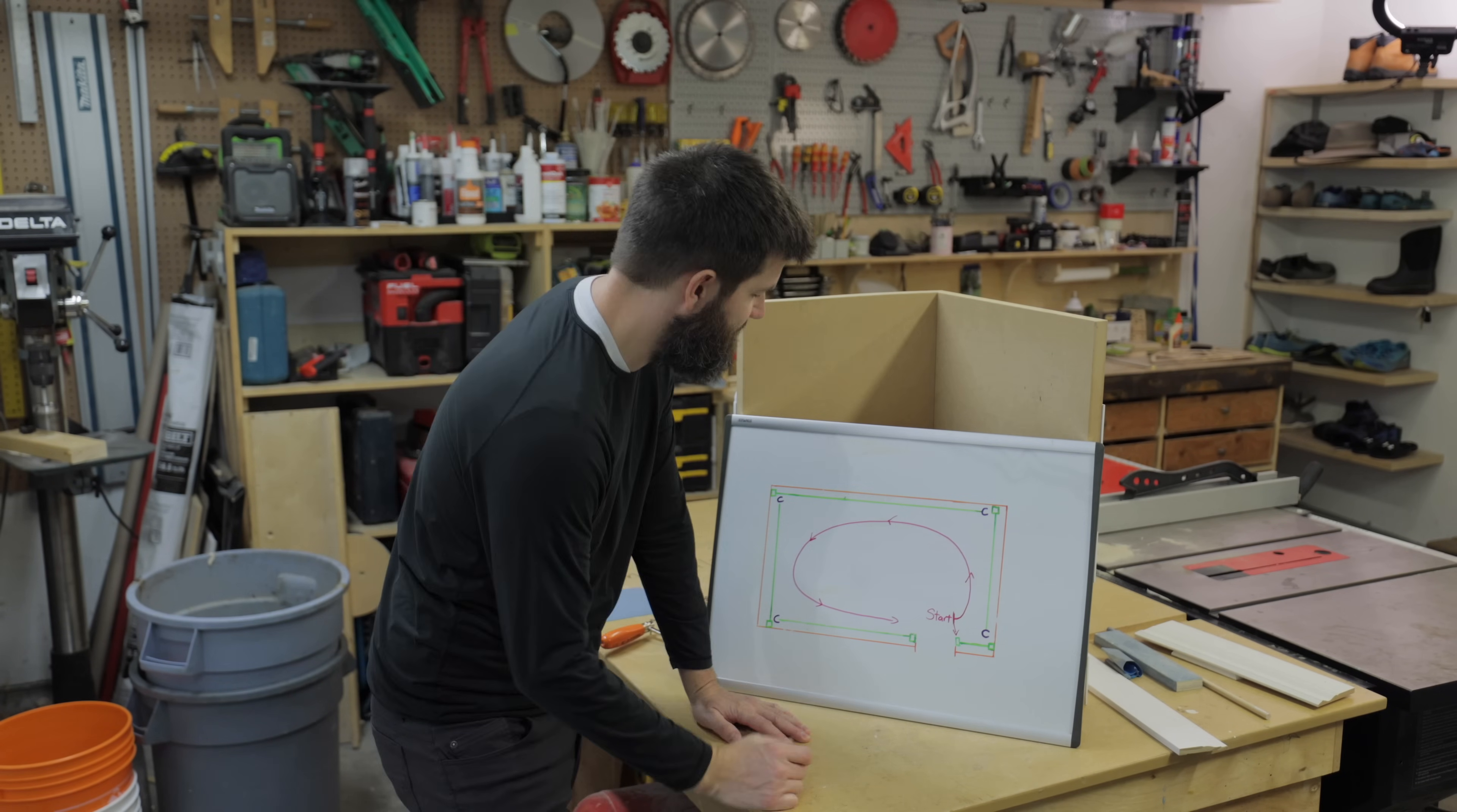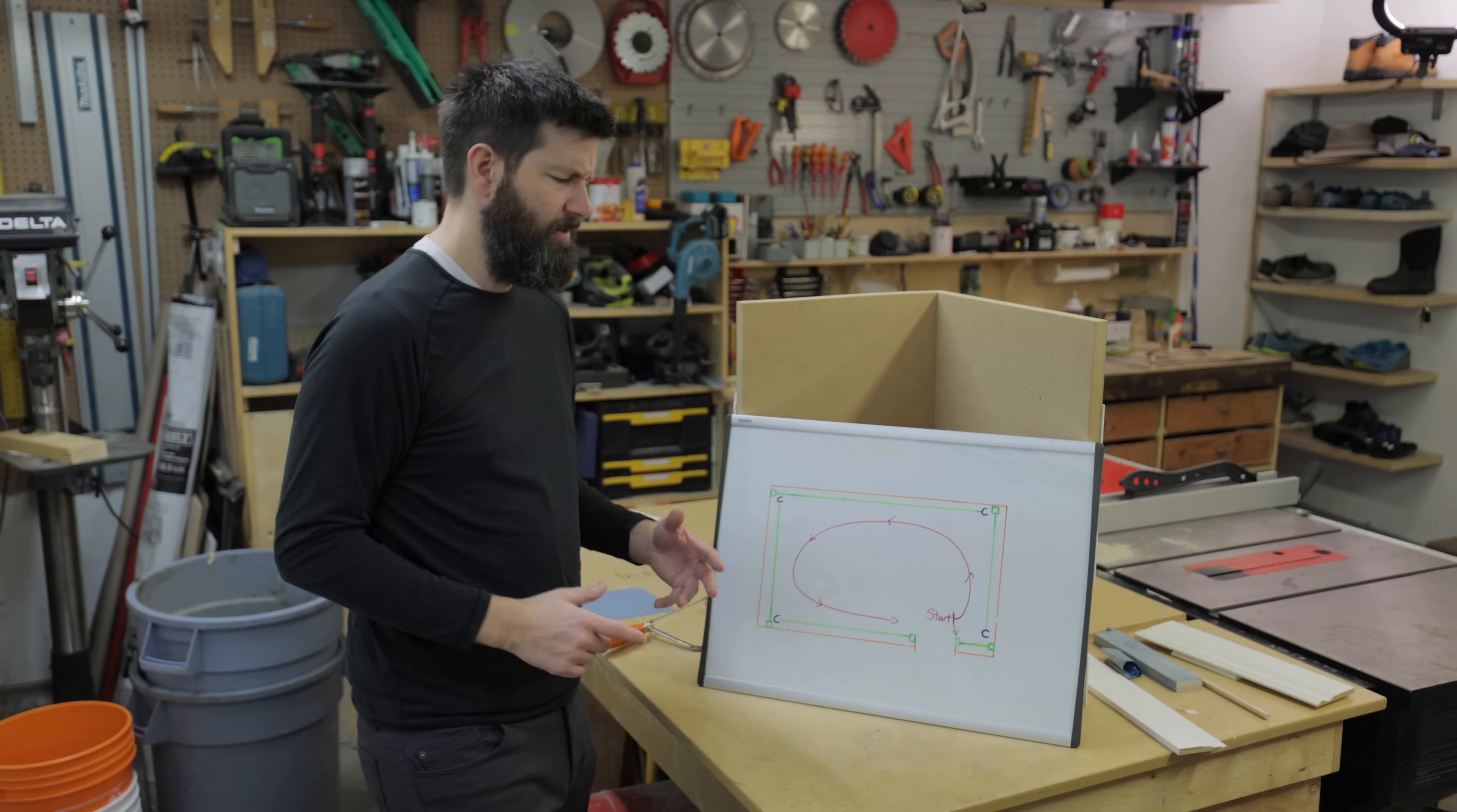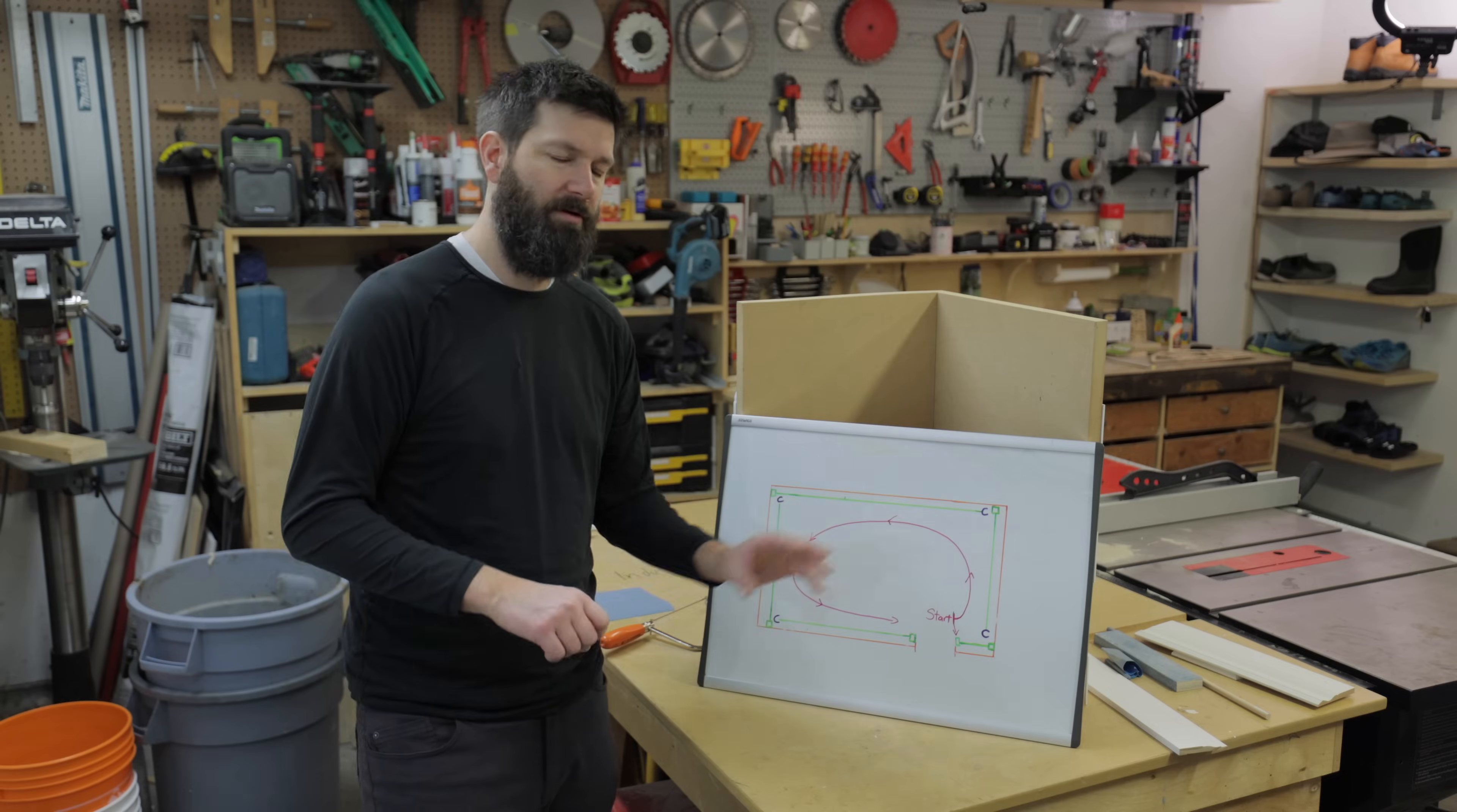So what you want to do here is for baseboards in a given room, you want to start at the doorway. And if you're right-handed, I like to work counterclockwise. It just makes sense in terms of stud finder, nail gun, pushing the baseboard in with your left hand.